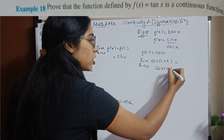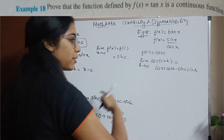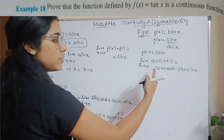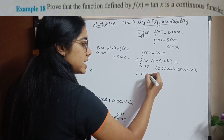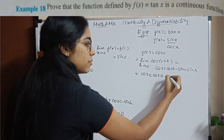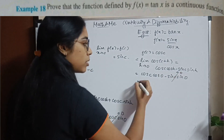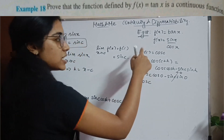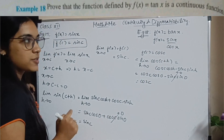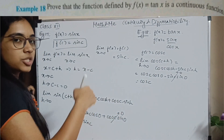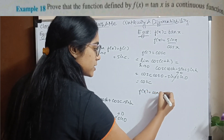Applying the same method, the limit as H tends to 0 of cos(C + H) = cos C cos H − sin C sin H. Substituting H = 0: cos C times 1 minus sin C times 0 = cos C. So cos X is also a continuous function. Since both numerator and denominator are continuous, their division is also continuous, so F(X) = tan X is continuous.